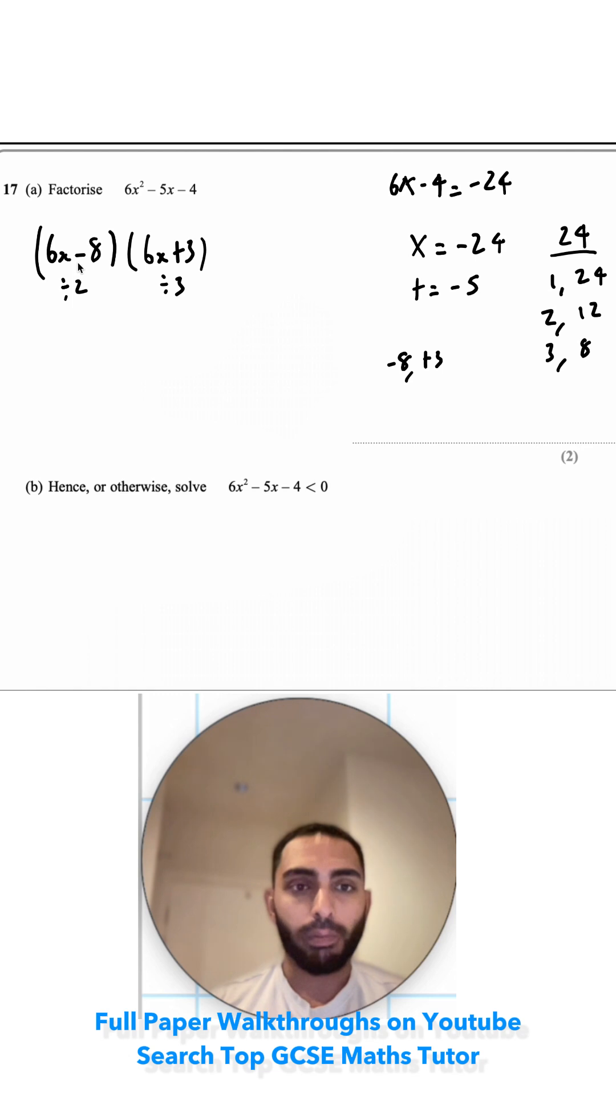So dividing everything here by 2 would give me 3x minus 4. And for this one, everything divided by 3, that would be 2x plus 1. And one way you can check this is 3 times by 2 gives me the 6x squared, and negative 4 times by the 1 gives you negative 4.